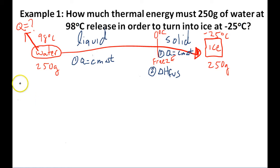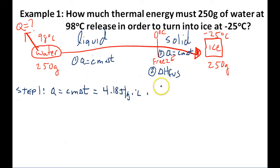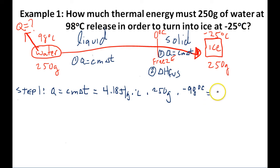Step one: we need to figure out how much thermal energy the water is going to have to release to go from 98 to 0 degrees using the Q equals CM delta T formula. We're talking about water in the liquid stage — the specific heat of water is 4.18 joules per gram degrees Celsius, the mass is 250 grams, and the change in temperature from 98 to 0 is negative 98 degrees Celsius. That gives us negative 102,410 joules. Since it's cooling down, the temperature change is negative — so the water releases this much energy to cool to 0.